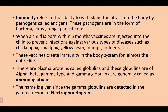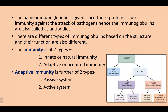These globulins are called plasma proteins. The name is given since the gamma globulins are detected in the gamma region of the electrophoretogram. The name immunoglobulins is given since these proteins cause immunity against the attack of pathogens.